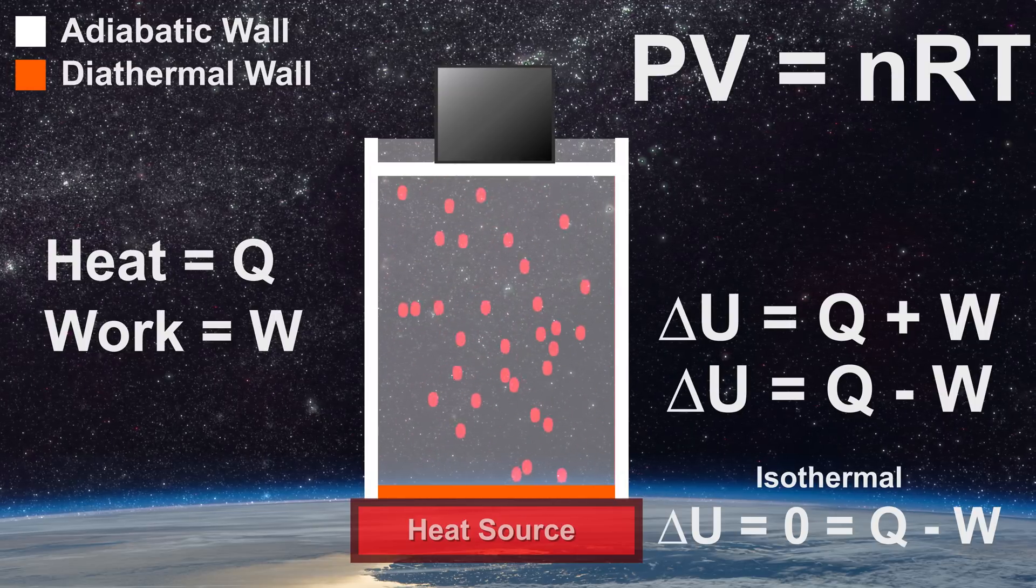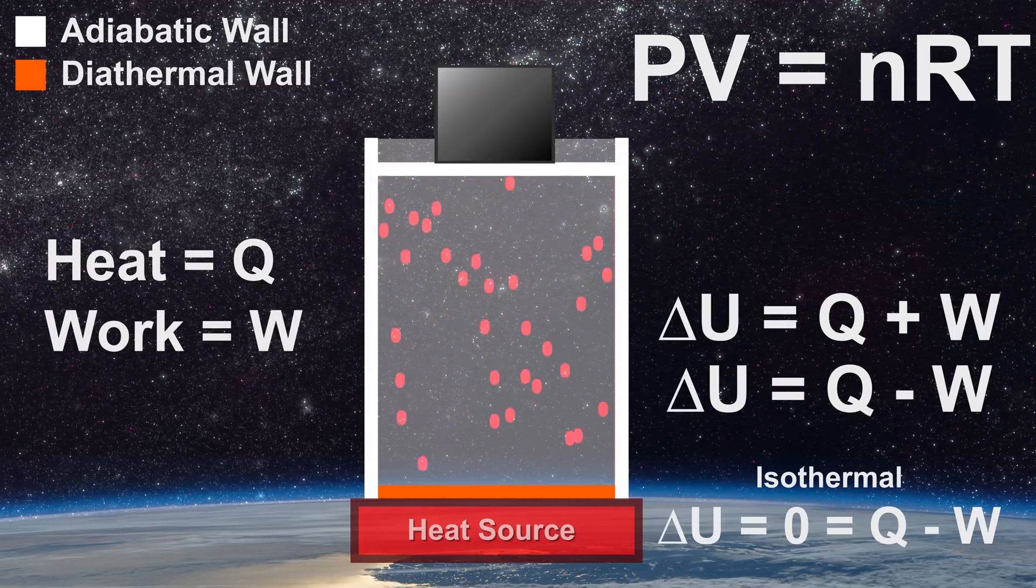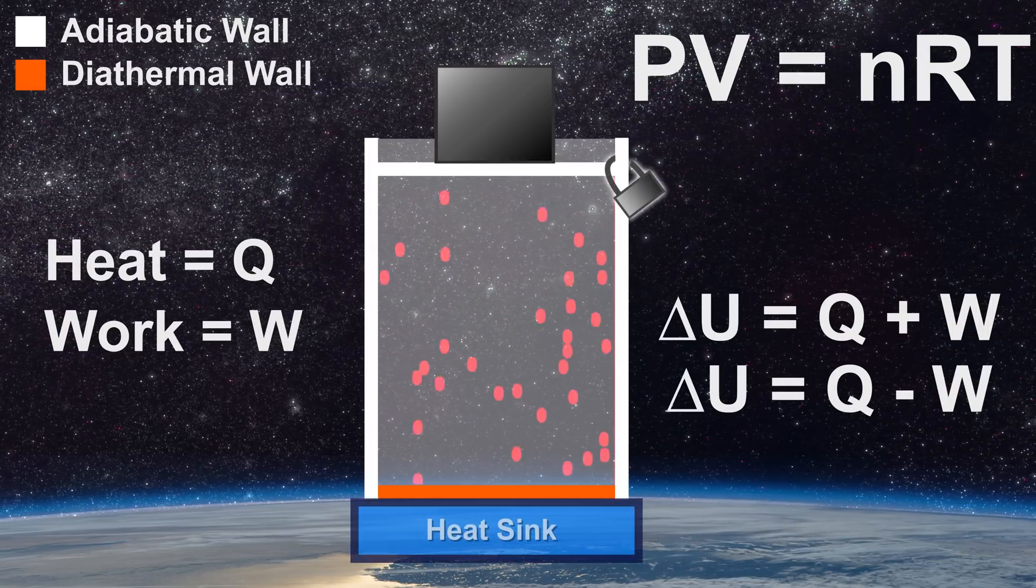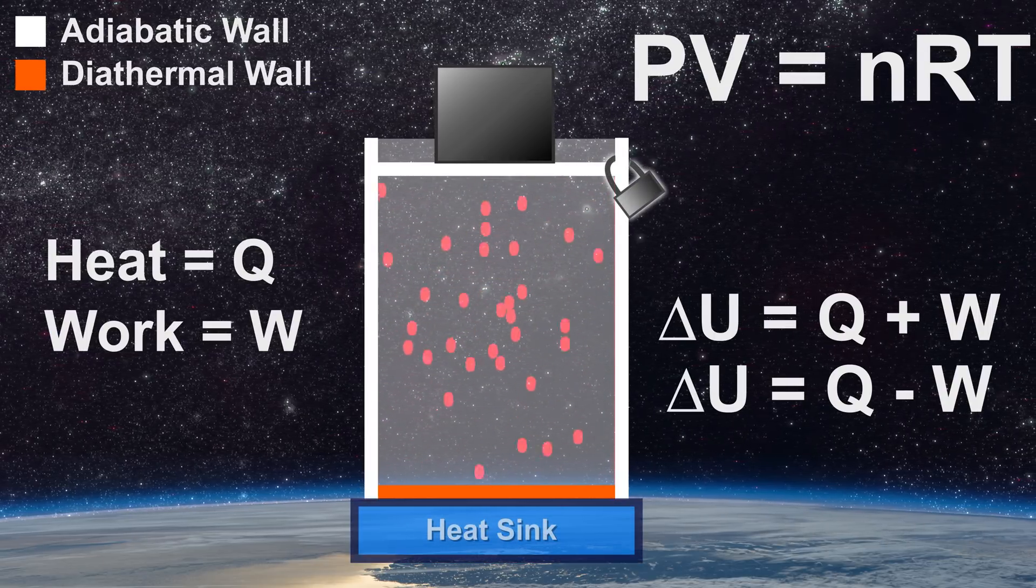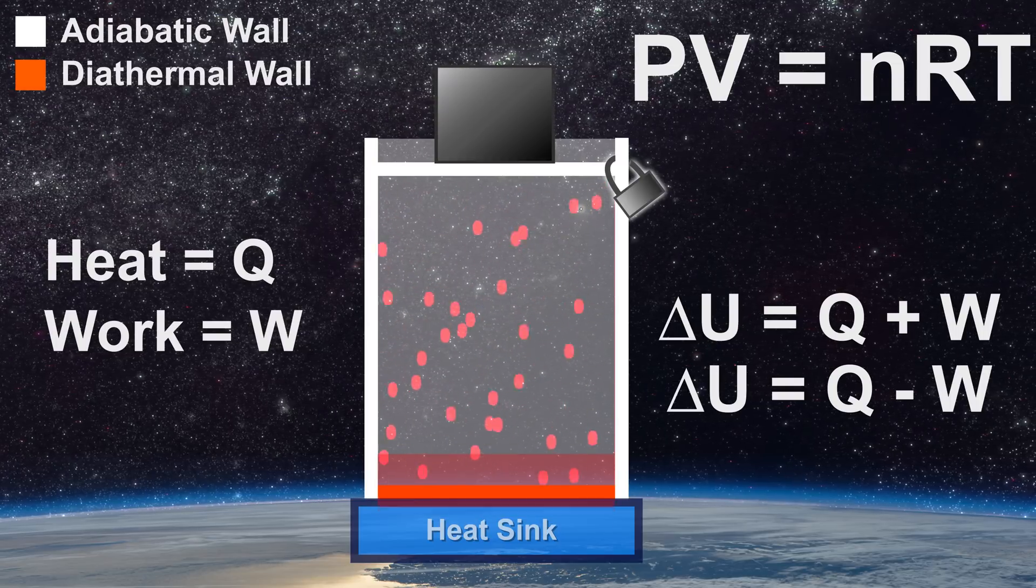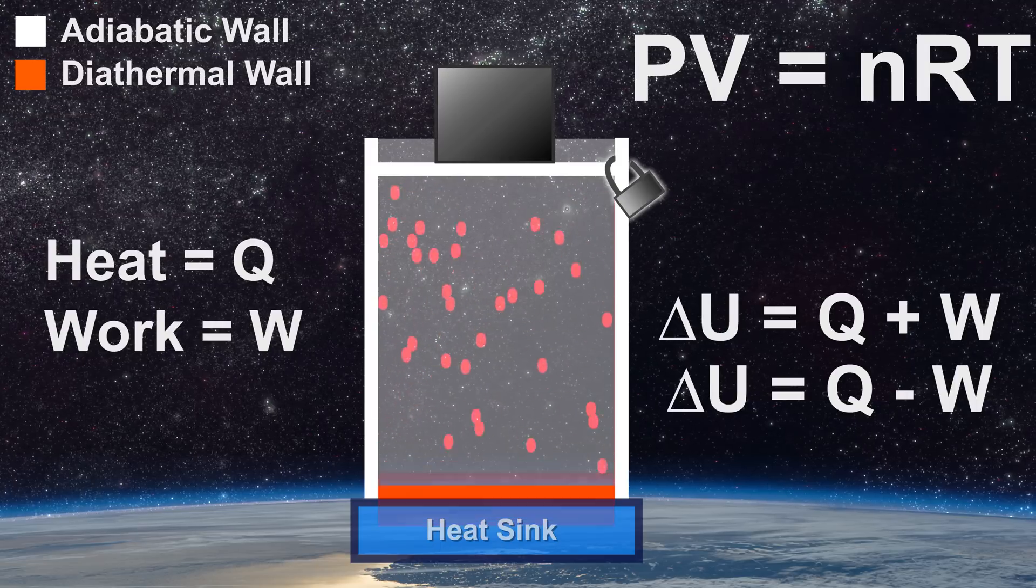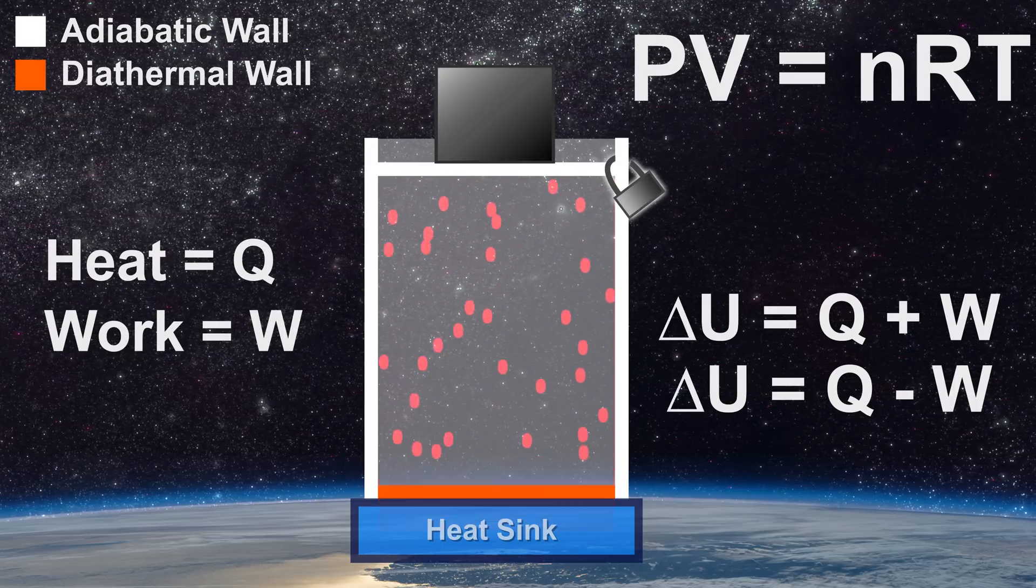In these examples, if the heat source was to be replaced by a heat sink instead and we locked our piston into place such that no work occurred, then energy could leave our system as heat through the diathermal wall. Q would be negative, the temperature would drop, and so would the internal energy of the system.